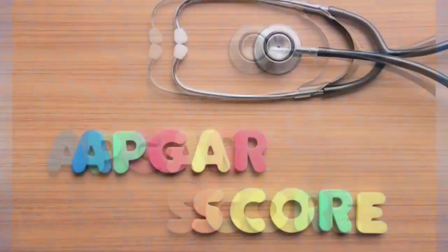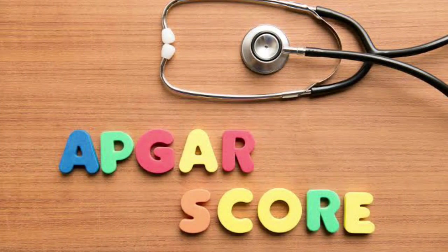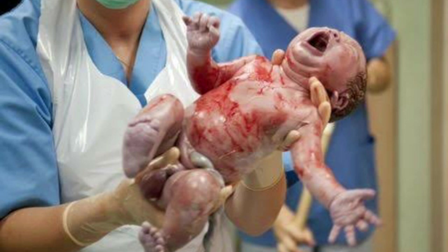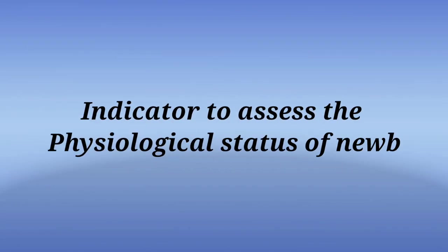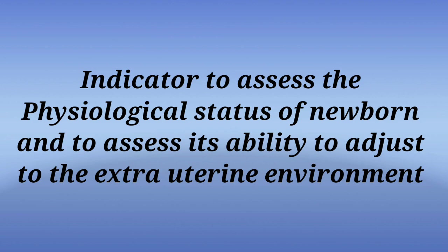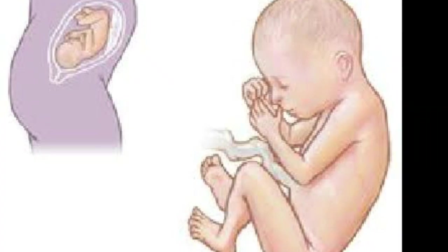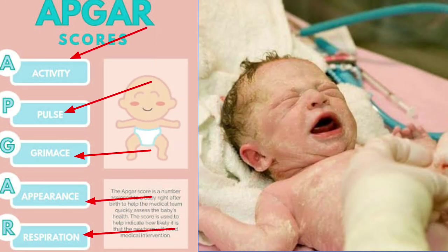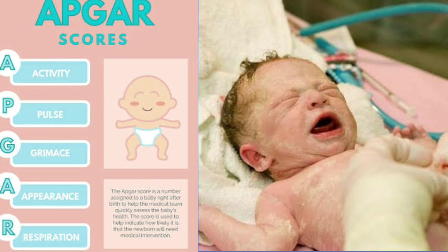The Apgar score is a scoring system used to assess the physiological status of a newborn baby at one minute and five minutes after birth. It is the best indicator of the newborn's physiological status and its ability to adjust to extra-uterine life immediately after delivery. This Apgar scoring system is based on the color of the baby, heart rate, reflex irritability, muscle tone, and respiration.